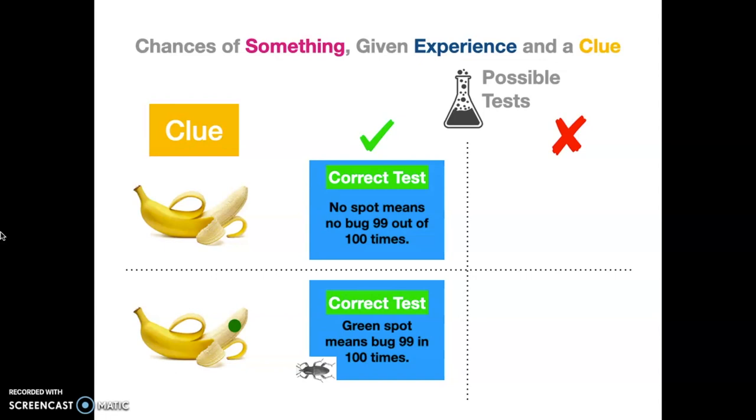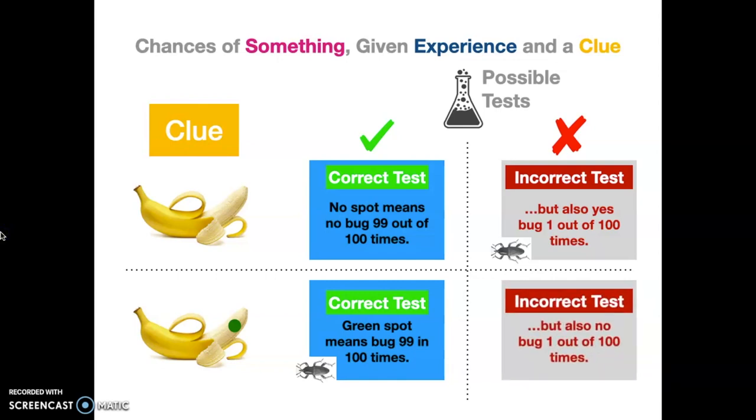They both only have a 1% chance of error in either direction. So if you've got no spot, 1% chance of error, you have a spot, 1% chance of error. But there's, of course, the other side of the test, the incorrect test, where one out of 100 of those times you are going to have a bug even if there's no spot. And one out of 100 of those times you've got no bug even though you have a spot.